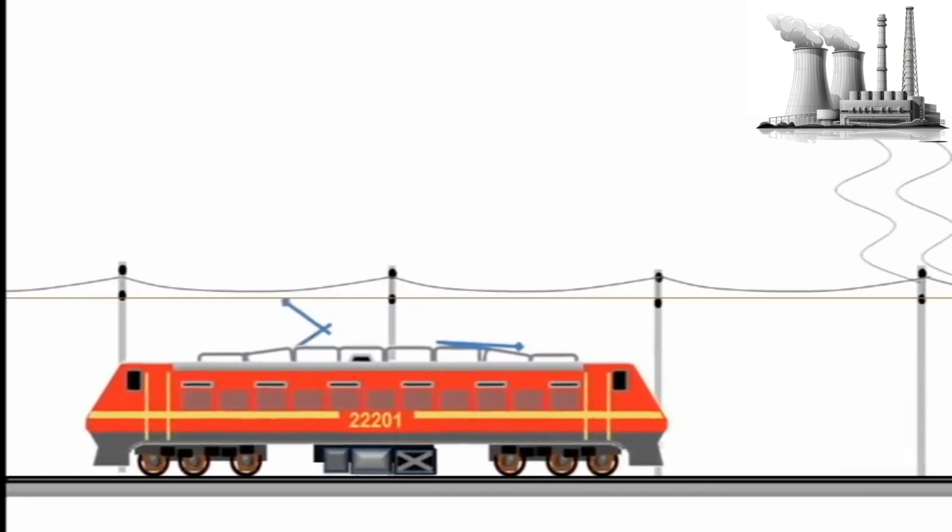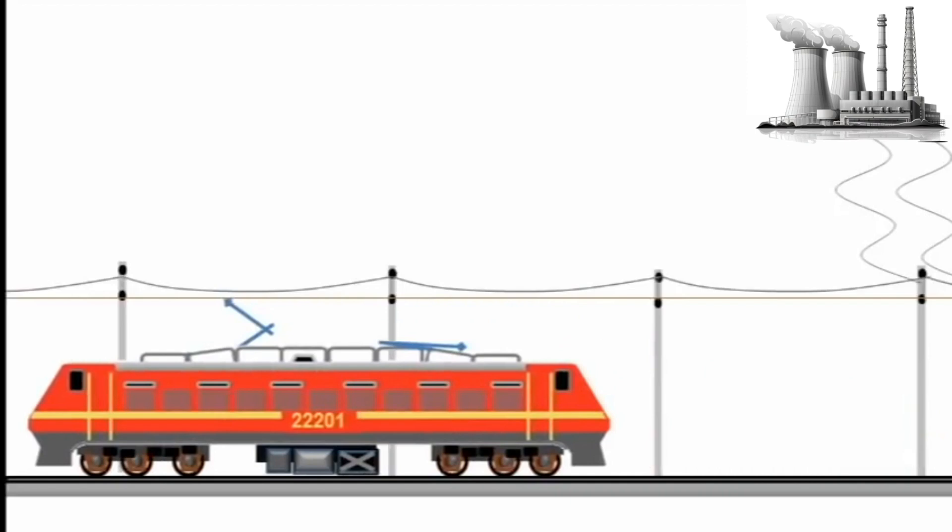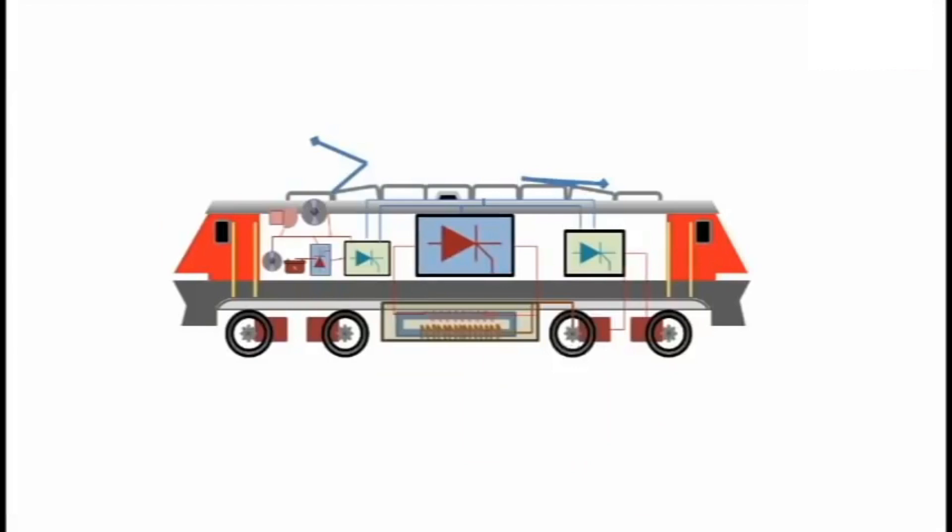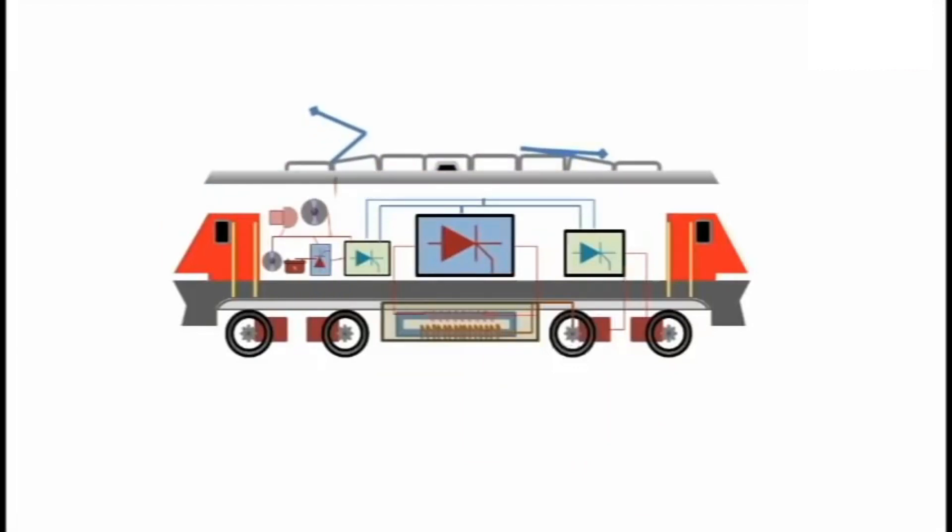Electricity produced at a distant power station is conveyed to the locomotive through overhead catenaries. An electric locomotive is essentially a box full of transformers and semiconductors.